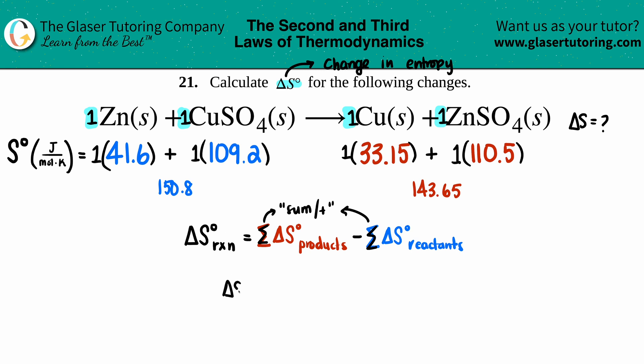So we have a delta S for the whole entire reaction: products minus reactants. So the product was 143.65 and I'm just going to subtract that with the 150.8. And look how close the number is going to be - it's going to be negative, but we could not guesstimate that from the get-go, you know, from the beginning. So 143.65 minus 150.8 and I get a negative 7.2.